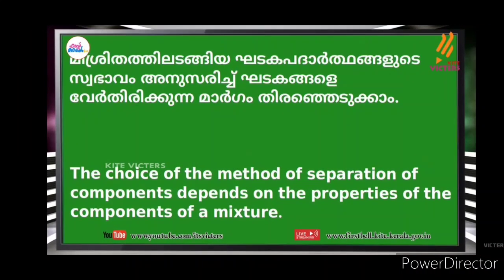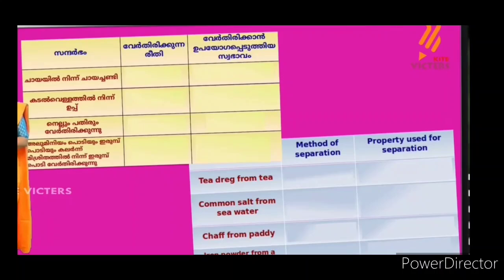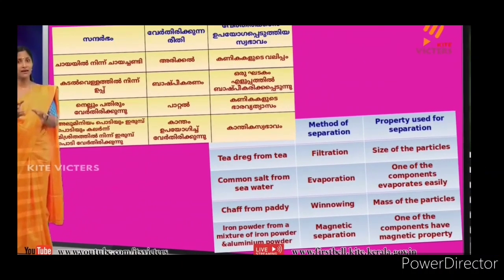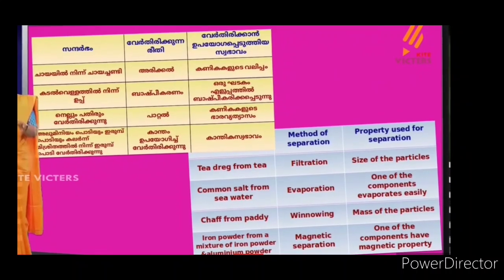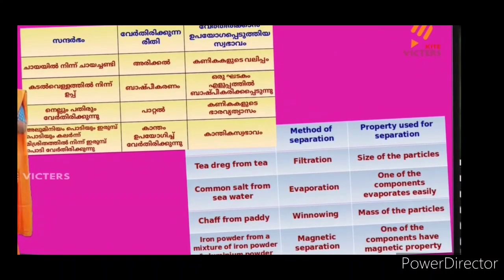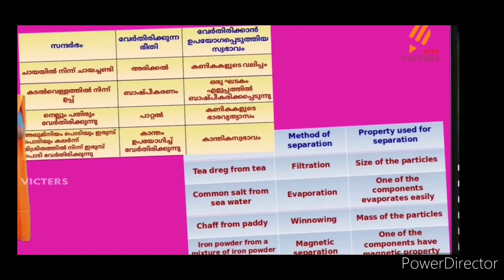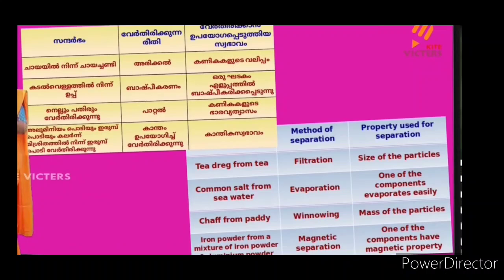The choice of the method of separation of components depends on the properties of the components of a mixture. Let's take a look at this table. Tea dregs from tea — chai-chandi is used in filtration. Property used for separation: the size of particles. The solution is used in filtration methods.